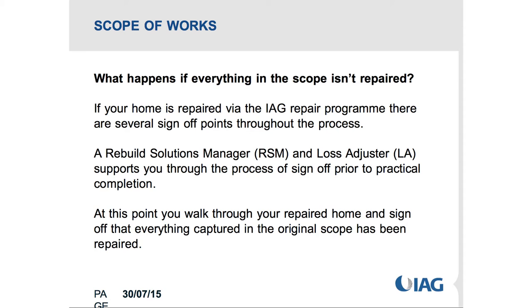One of the questions was: what happens if everything in the scope isn't repaired? The scope is the point in the process where you are most involved. Before any repair is undertaken, a scope is done and the builder and your loss adjuster will walk through the home with you. That's your opportunity to make sure that all earthquake damage is captured in the scope. Once the scope is agreed, your insurer will cost the damage, and then have a conversation about whether you cash settle or continue with the repair.